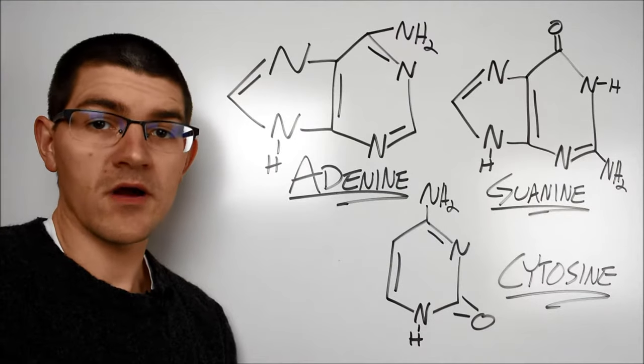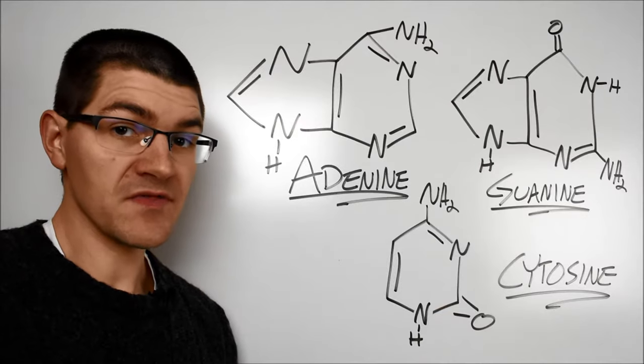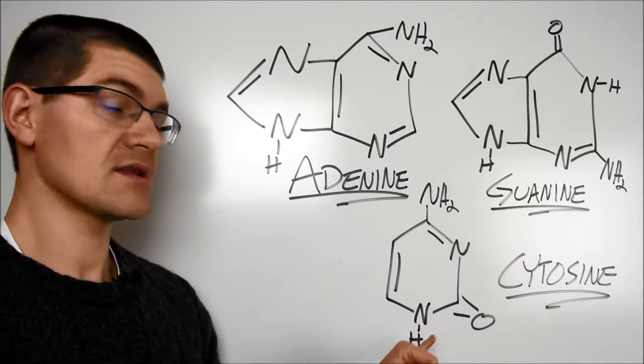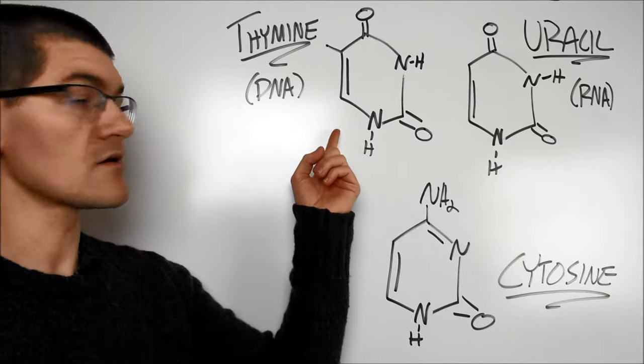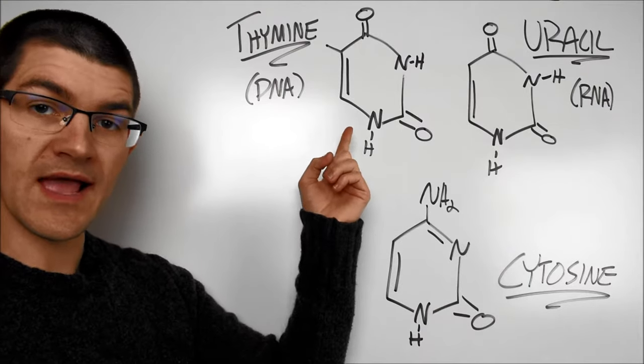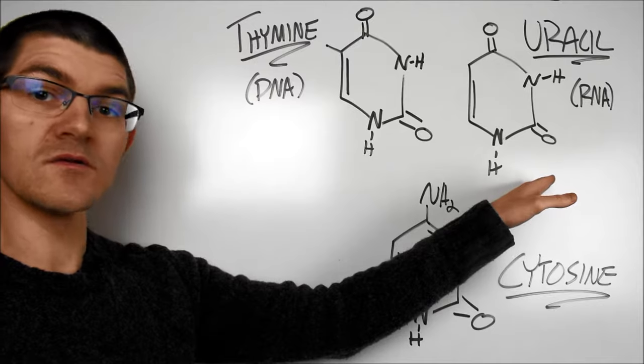DNA and RNA have four bases each. They share these three: adenine, guanine, and cytosine. In DNA, the fourth base is this molecule here, thymine. In RNA, however, the fourth base is this molecule, uracil.